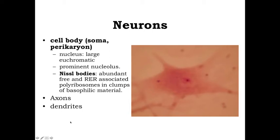We can see a relatively large nucleus, fairly euchromatic — so a pale staining presence to the nucleus — as well as a distinct nucleolus present. The nucleolus is where we're going to be producing the ribosomal RNA, and so that's going to be an indication that we're dealing with a cell that is highly metabolically active and involved with synthesizing a lot of protein.